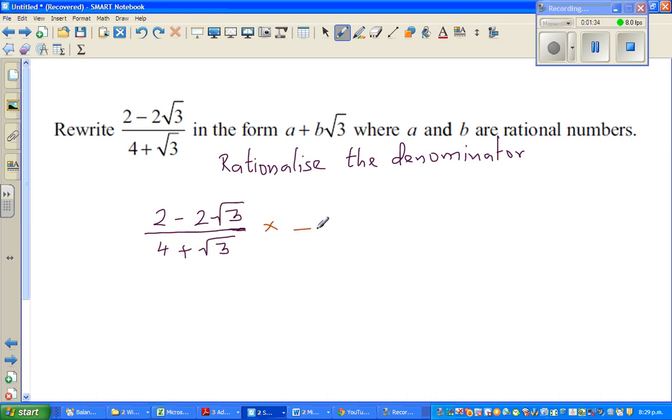So this 4 plus root 3, the conjugate of 4 plus root 3 is 4 minus root 3. So if you're multiplying the denominator with 4 minus root 3, you also multiply the numerator with 4 minus root 3. So basically, this is nothing but 1.